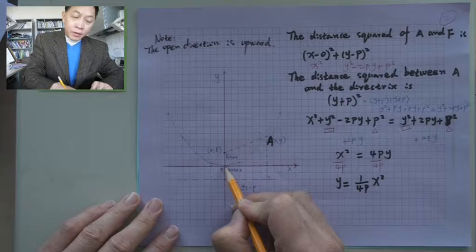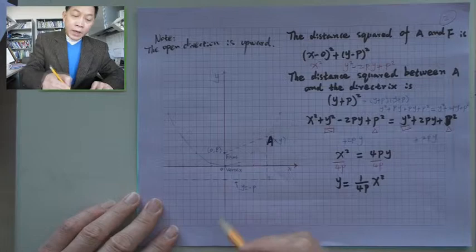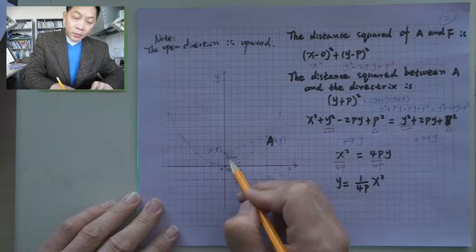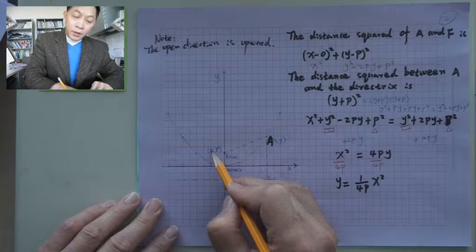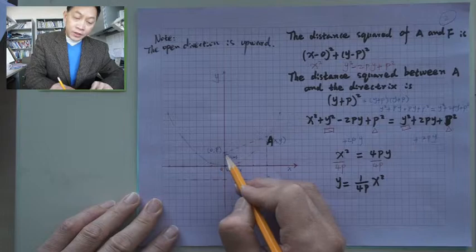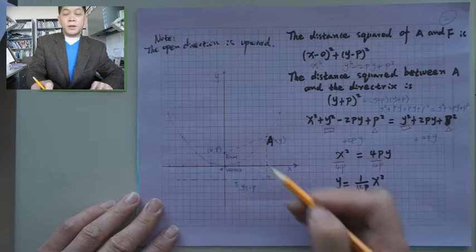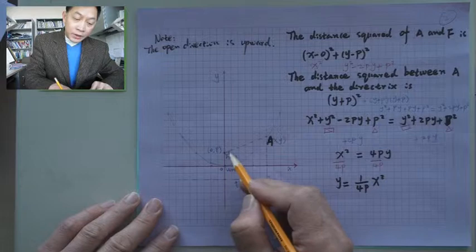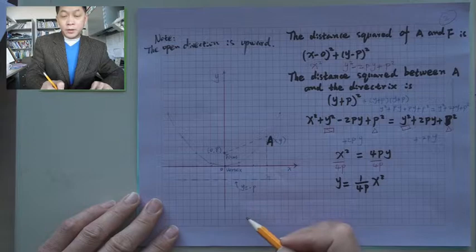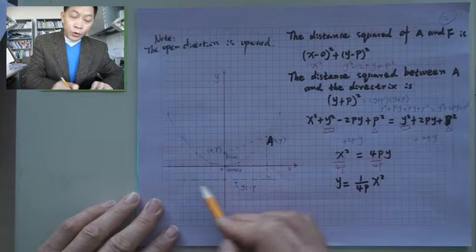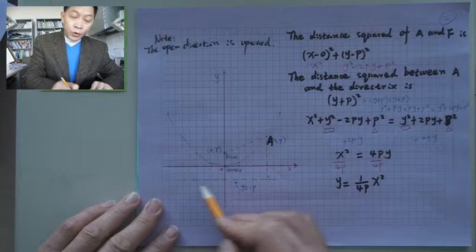Since the vertex is in the middle between the focus and the directrix, we may assume the coordinate for the focus is (0, p), because it's on the y-axis so x will be 0. We don't know p yet. Let's assume this distance between the focus and the vertex is p. Then the equation of the directrix can be written as y equals negative p, since it is a horizontal line and y is constant.